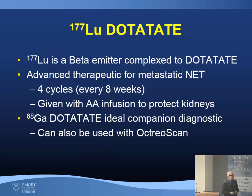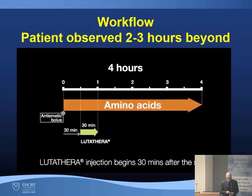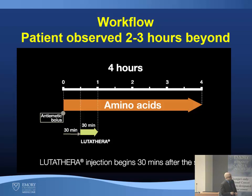Lutetium-177 is a beta emitter given in four cycles every eight weeks, with amino acid infusion to protect the kidneys. Gallium dotatate is an ideal companion diagnostic. The basic workflow: the patient gets anti-emetics because the amino acid mixture currently available causes a lot of nausea. We're hoping to have an arginine-lysine mixture available by end of year, which causes much less nausea. Then the lutathera — lutetium-177 dotatate — is infused over 30 minutes; amino acids go in for another three hours, and the patient is observed for another three hours.